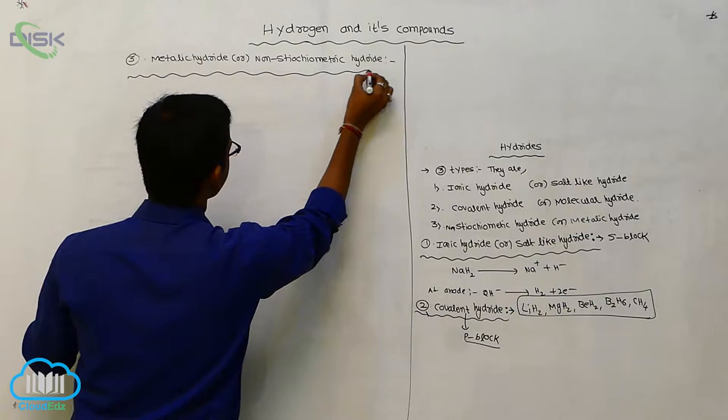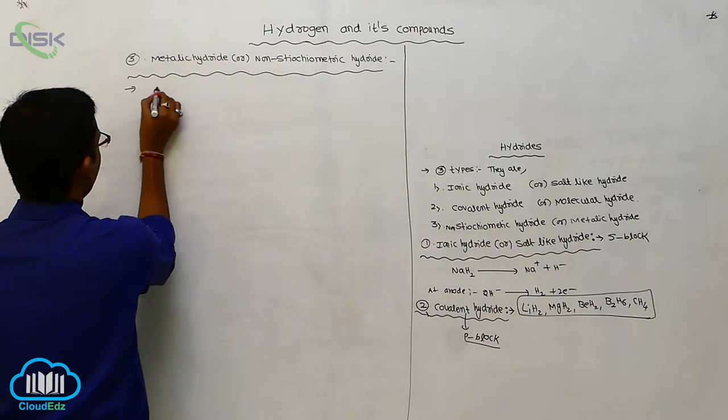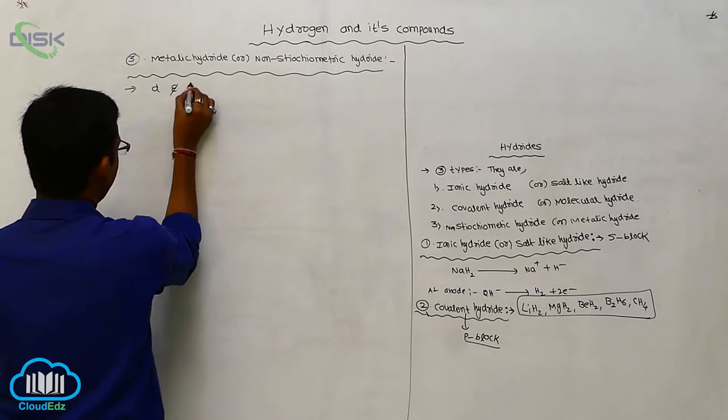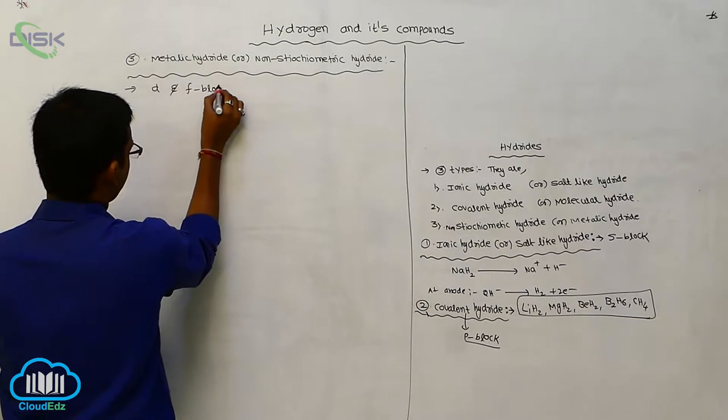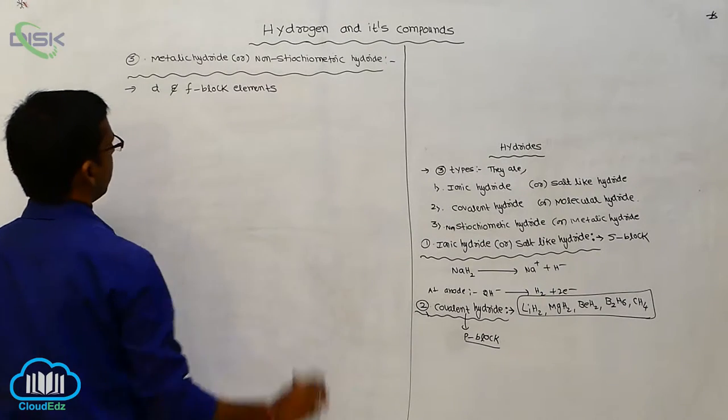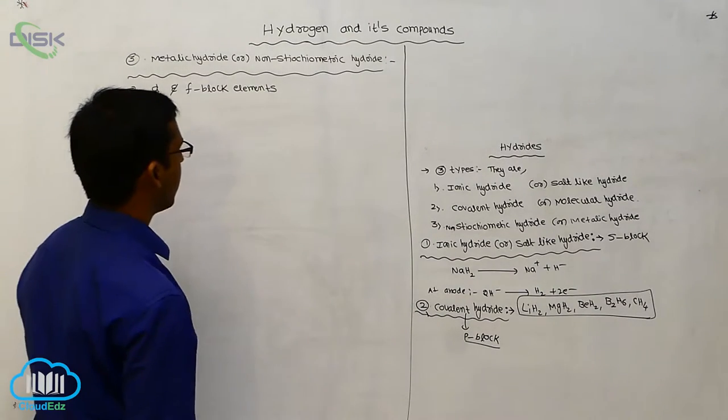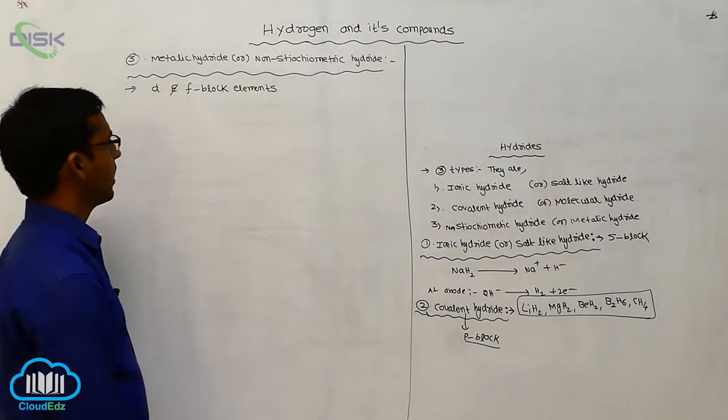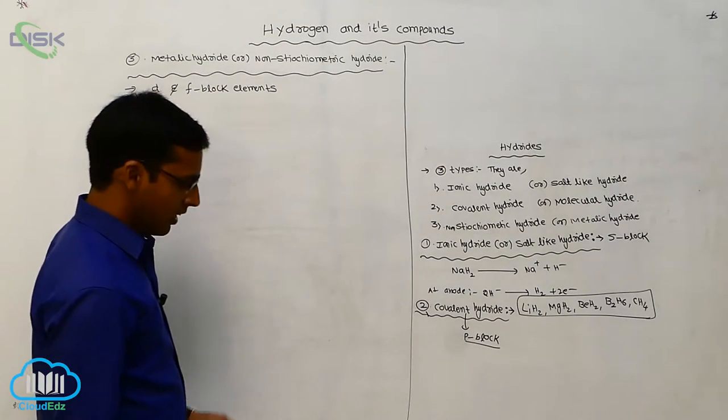Hydrides, here hydrides are produced from D and F-block elements. So, D and F-block elements participate for the formation of metallic hydride or non-stoichiometric hydride.